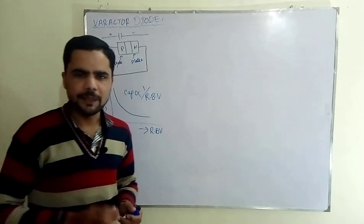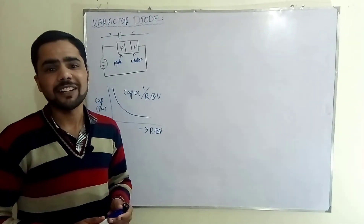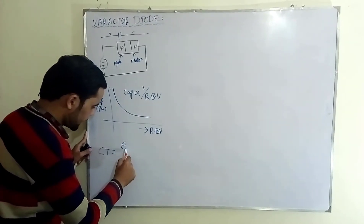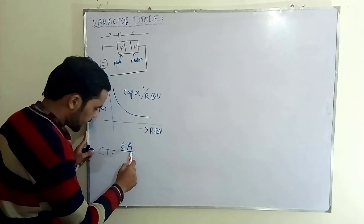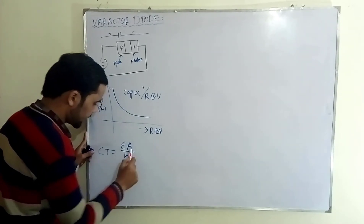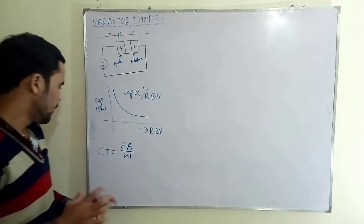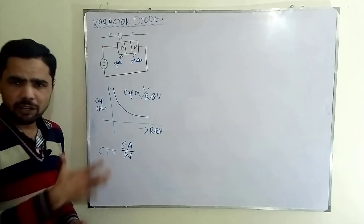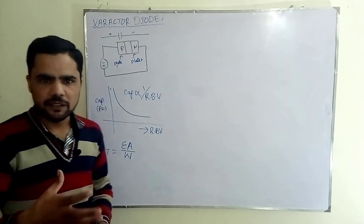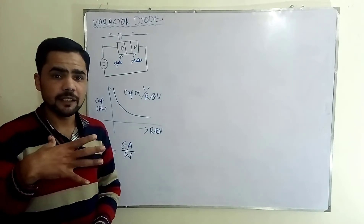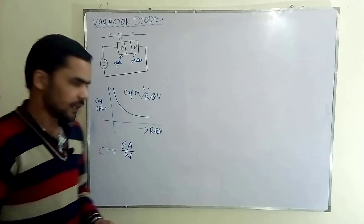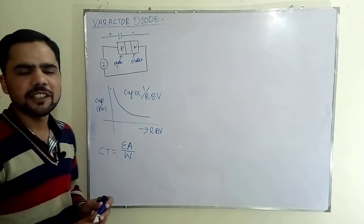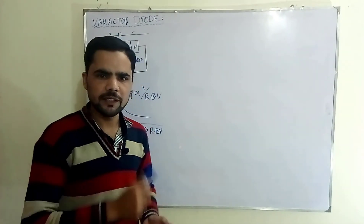Now we will see the basic formula for transition capacitance. The transition capacitance formula is: capacitance equals permittivity multiplied by cross-sectional area, divided by the width of the depletion region. This formula tells us that when the width of the depletion region increases, the transition capacitance gets reduced.